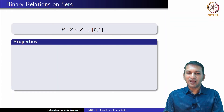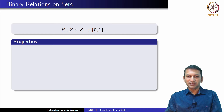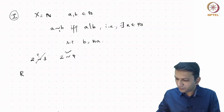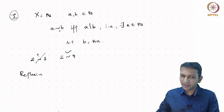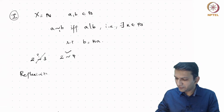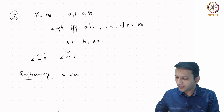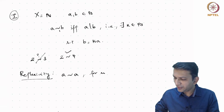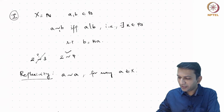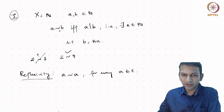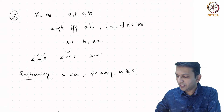What do we understand by reflexivity? A binary relation is reflexive if a is related to itself for every a in the set. You will see immediately that the divisibility relation defined above is actually reflexive, because every number divides itself — for example, 2 is related to itself.